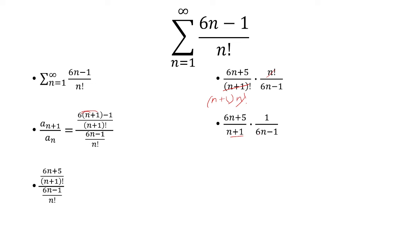Now I'm going to FOIL out the two denominators. You get 6n squared plus 5n minus 1. And so now I have found the ratio of the n plus first term over the nth term.